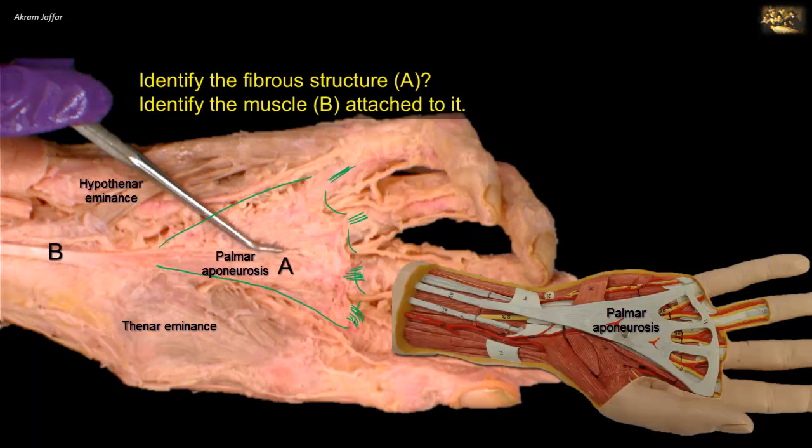The tendon attached to the apex of the palmar aponeurosis belongs to a muscle of the flexor compartment of the forearm — it is the palmaris longus muscle of the superficial group of flexor muscles. This muscle is characterized by a short belly and a long tendon that passes superficial to the flexor retinaculum and is attached to the palmar aponeurosis. The tendon may be absent in some people; although its function is negligible, it is clinically useful as it might be used for tendon grafting elsewhere in the body.